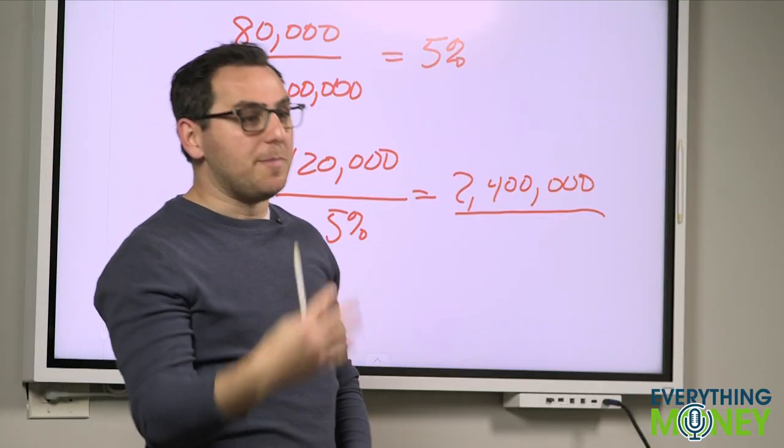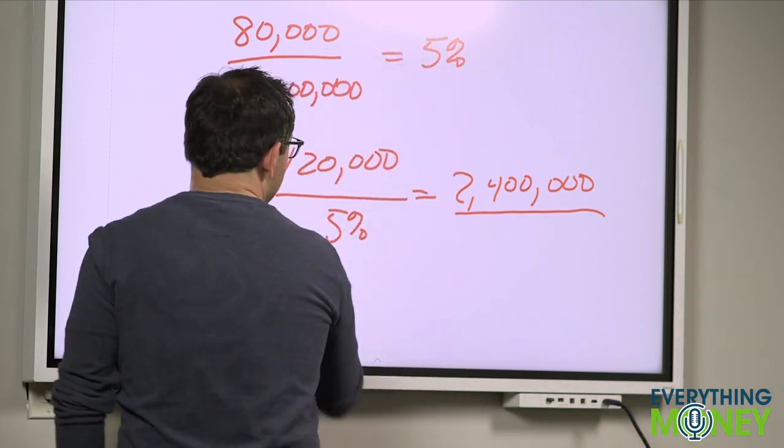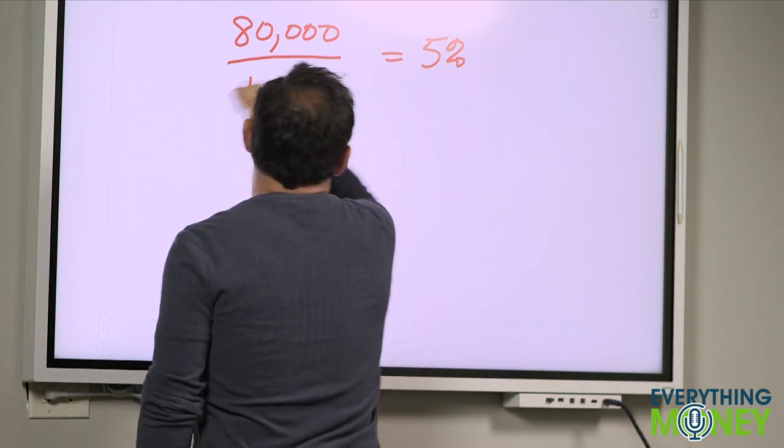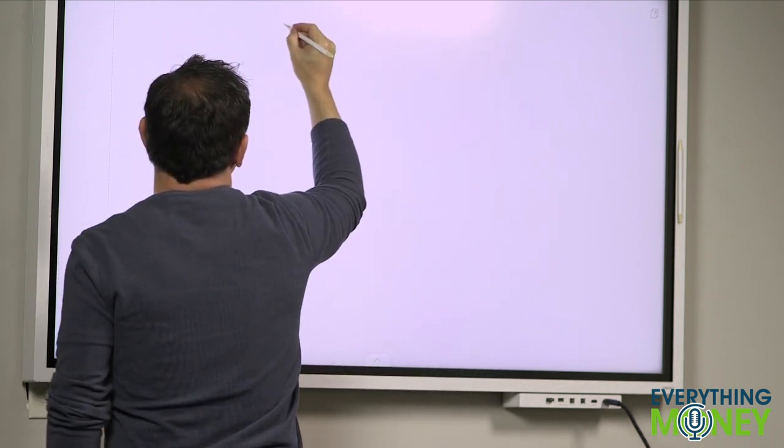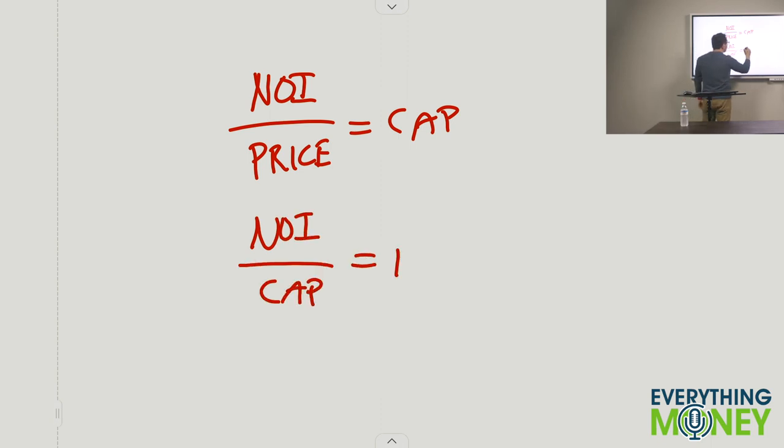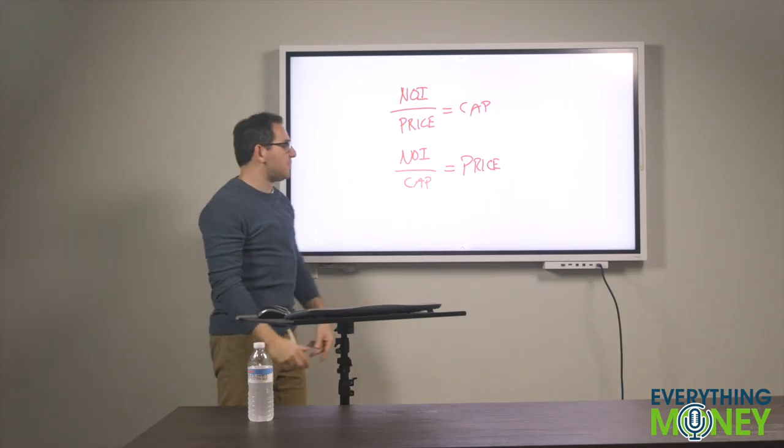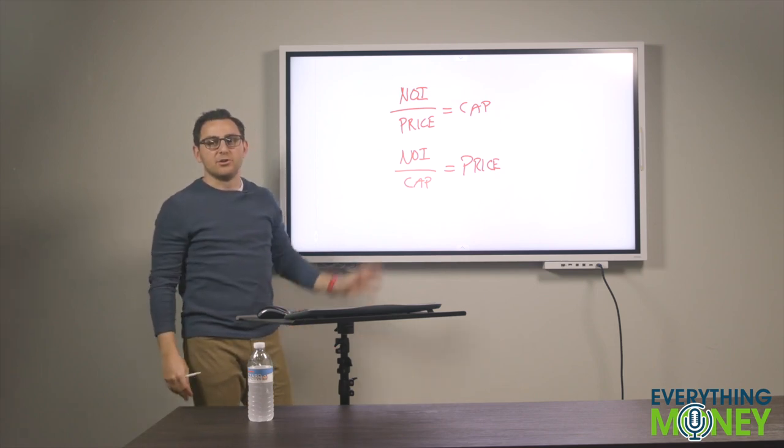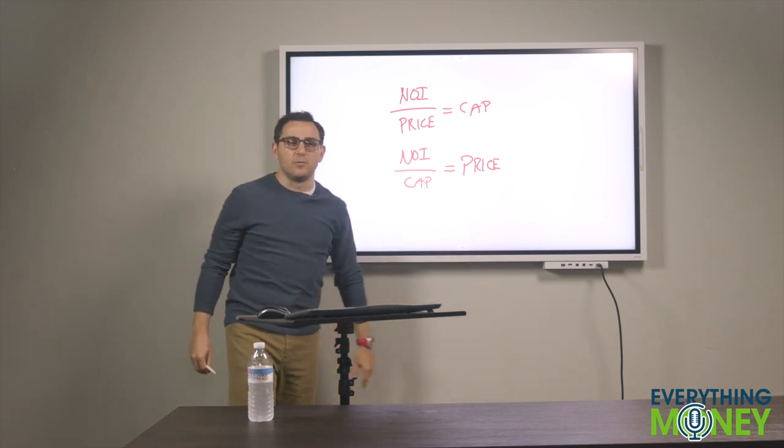So these are how cap rates work. It can be confusing. My recommendation is to just keep working on the equation. The full equation is NOI divided by price equals cap rate. Now remember, cross multiply. NOI divided by cap rate equals price. You use these together to figure out the price you want to pay or the cap rate you're getting. If you know two of these, you'll always be able to figure out the rest. Use these to always figure out where you are in your deal.